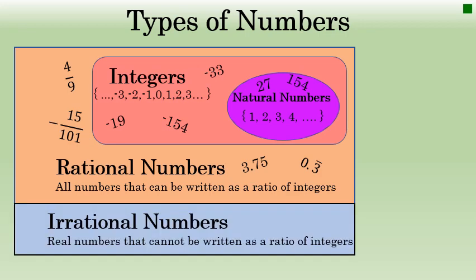Simply put, the irrational numbers are the rest of the real numbers that are not rational. The irrational numbers cannot be written as fractions having integers in the numerator and denominator.